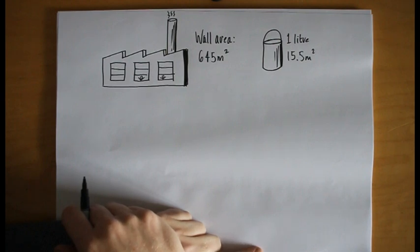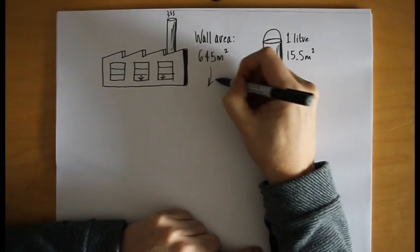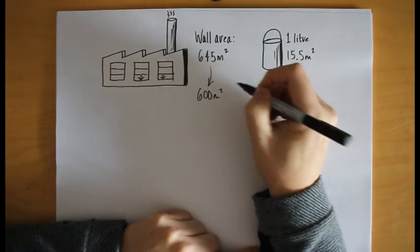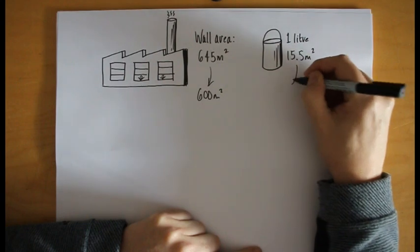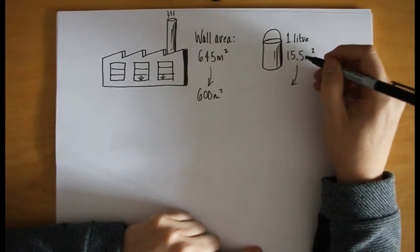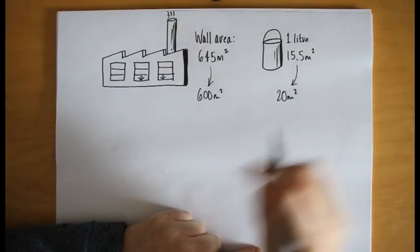Let's see what happens when we apply our rules of rounding to these figures. So 645 becomes 600 square meters, and by the same rules, 15 and a half meters from the coverage would go to 20 square meters.